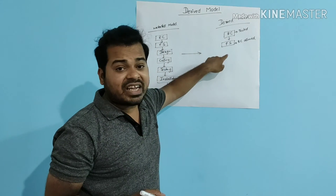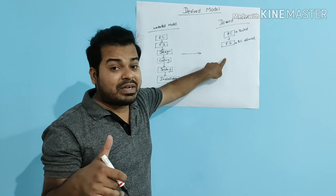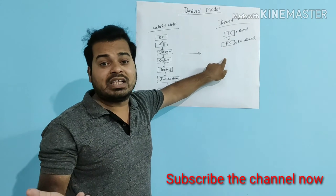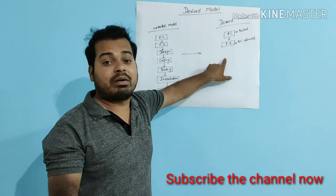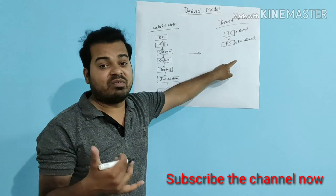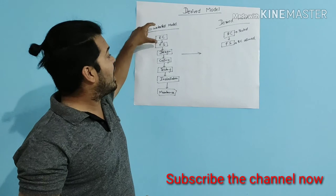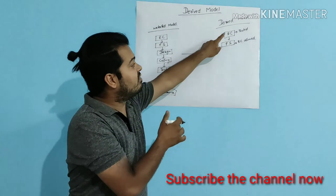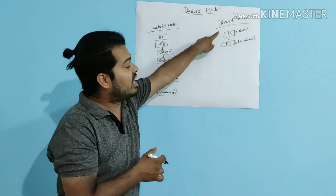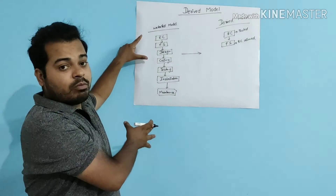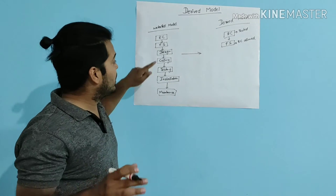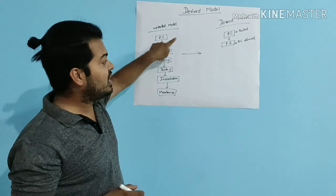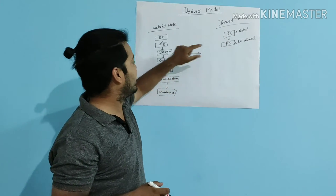Since it is a derived model, these changes will be done because of company standard or because of a specific requirement. So the company can do whatever they want. I am deriving a derived model from my waterfall model. In my waterfall model, requirement collections were not tested, but in my derived model I am testing them.